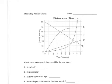Remember, for this one, the slope equals velocity. So which one is parked? A parked car has a velocity of zero, so therefore this one has a slope of zero. That makes the answer C.